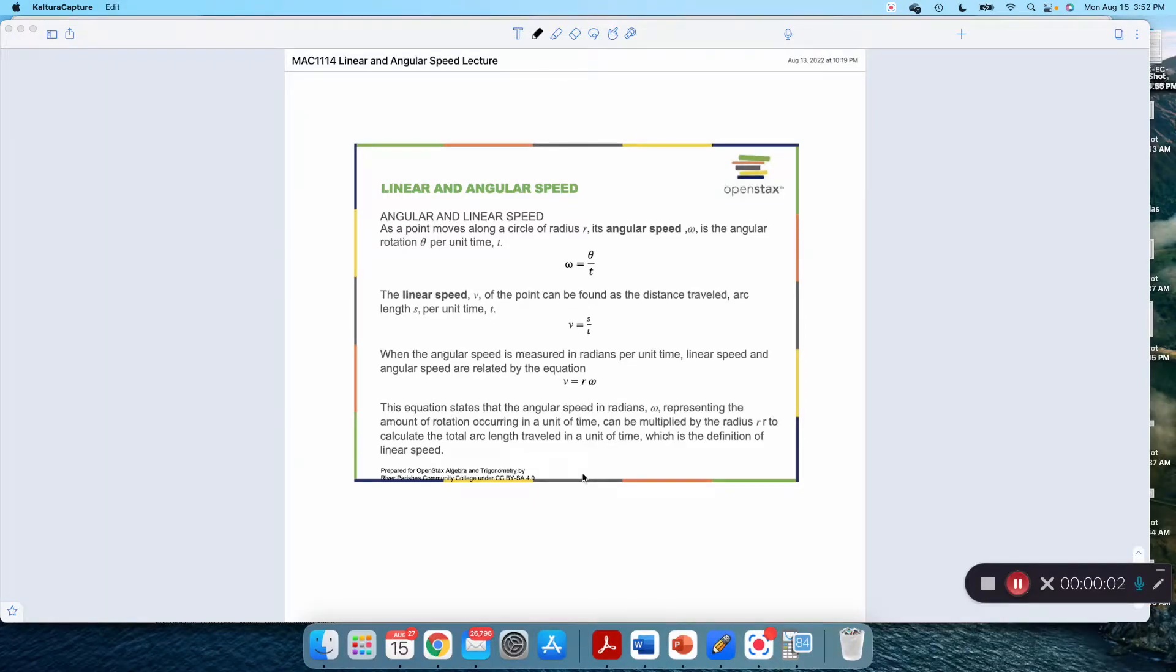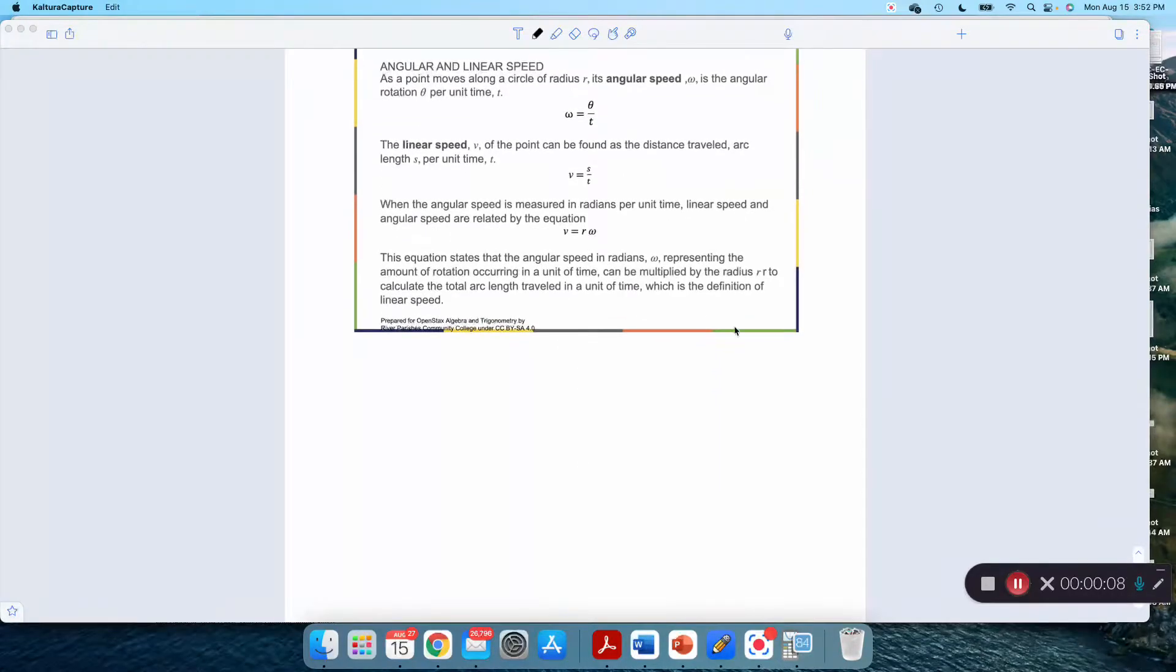Okay, let's talk about linear and angular speed. Our scenario here is we've got something rotating in a circle, rotating around. If we think of this as a central angle with radius r, theta is increasing.